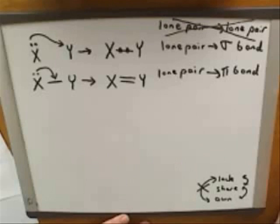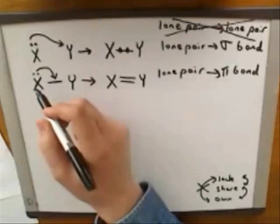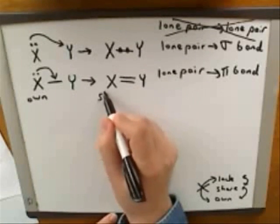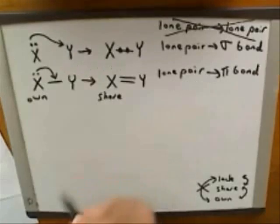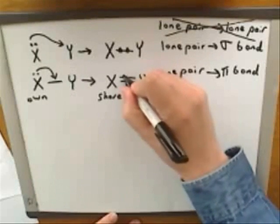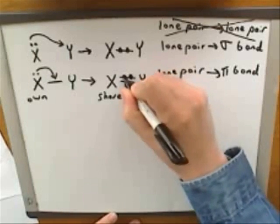Let's make sure that this is really legal here by talking about lacking, sharing, and owning. So the X here owned the pair of electrons, and here the X is sharing the electrons. So that reminds me, something I'm going to do here is let's actually draw the electrons in this pi bond.